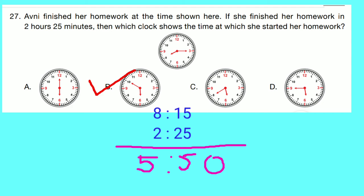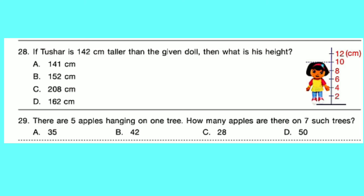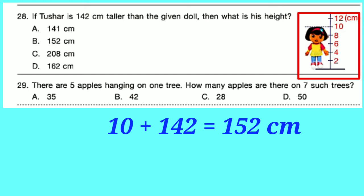Question number 28: If Tushar is 142 centimetres taller than the given doll, what is his height? Height of the doll: 10 centimetres. Adding 142 to 10 centimetres, we get 152 centimetres. Option B is correct — Tushar's height is 152 centimetres.